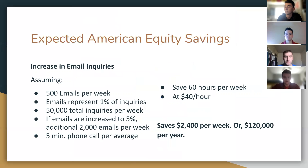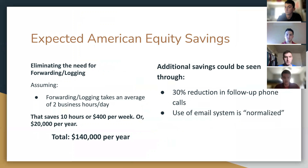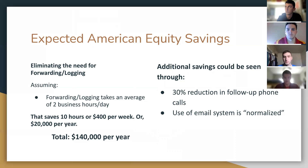To quantify our solution, we looked at two main avenues. First, an increase in email inquiries handled by American Equity, which through numbers they provided yields savings of $120,000 per year. Second, eliminating the need for forwarding and logging from the old system saves an additional $20,000 per year, for a total of $140,000 per year. We also anticipate additional savings from a 30% reduction in follow-up phone calls as the email system is used more. Thank you.